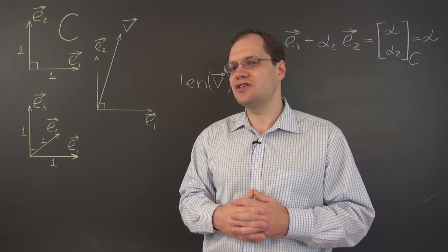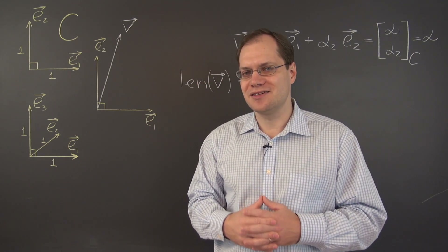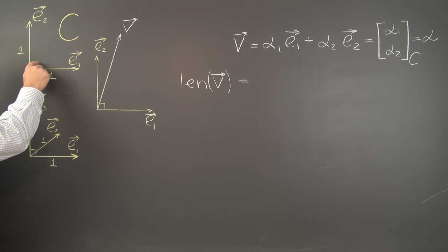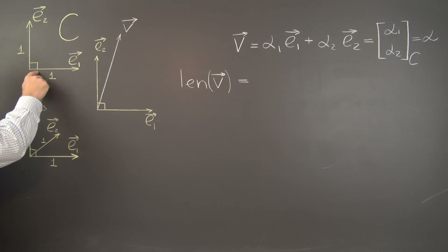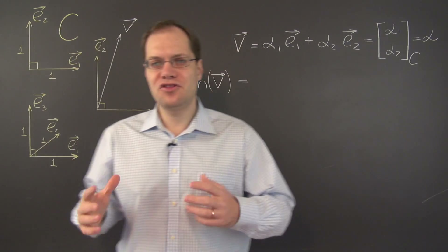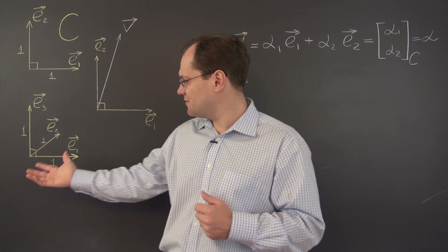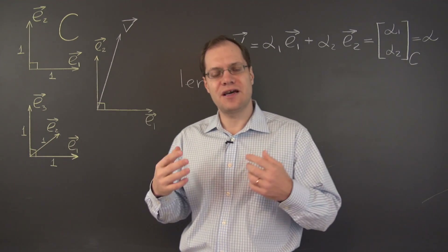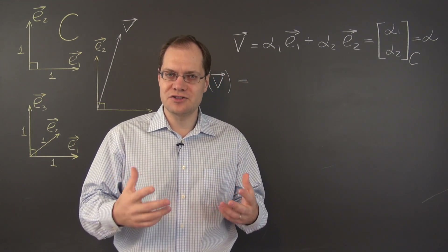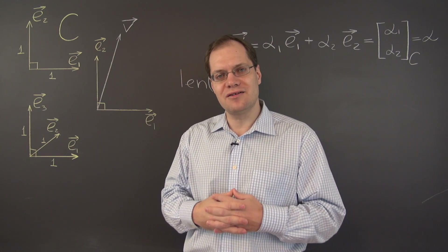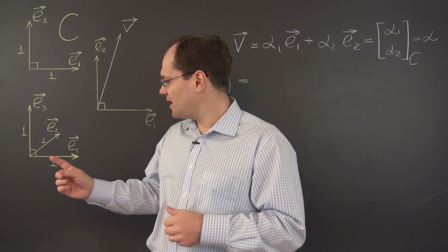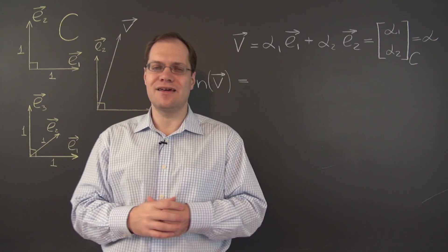Let me remind you what a Cartesian basis is. A Cartesian basis, starting in the plane, consists of vectors that are orthogonal to each other and each is unit length. In three dimensions, the definition is analogous: we have three vectors, all mutually orthogonal — meaning any two are orthogonal — and all are unit length.